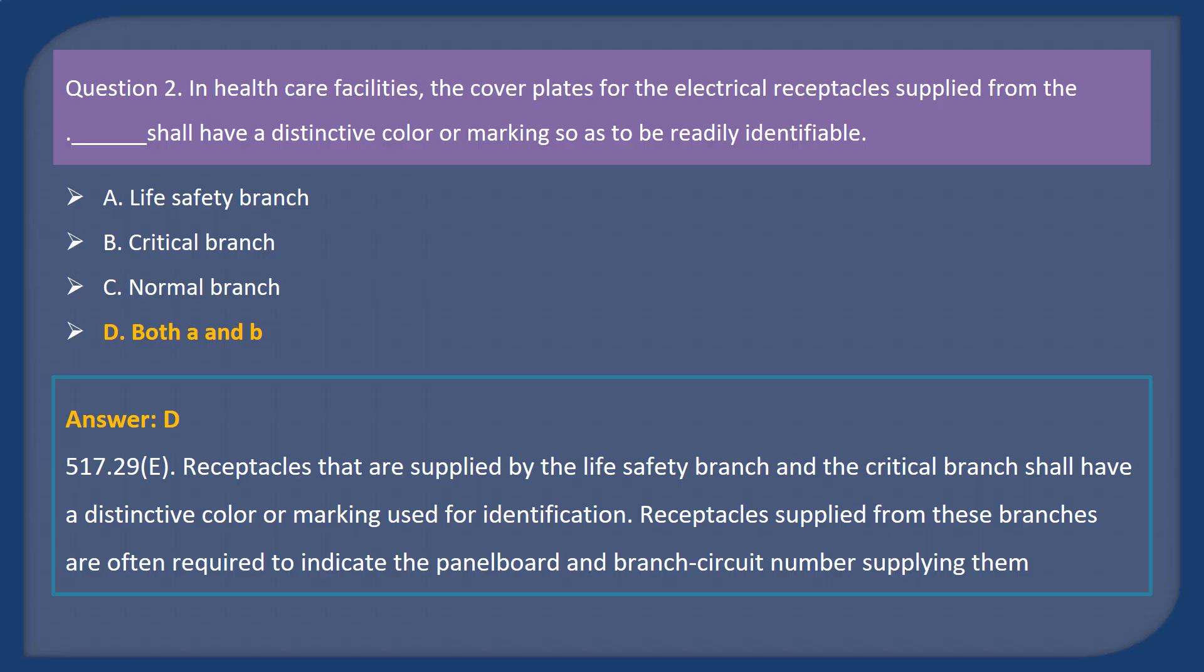Answer: D. Explanation. 517.29E. Receptacles that are supplied by the life safety branch and the critical branch shall have a distinctive color or marking used for identification. Receptacles supplied from these branches are often required to indicate the panel board and branch circuit number supplying them.